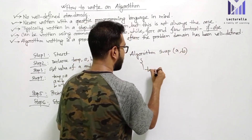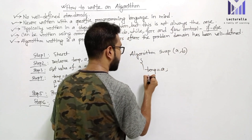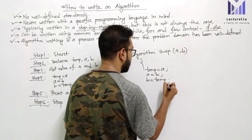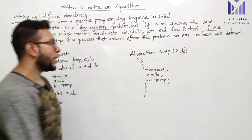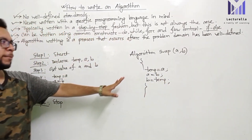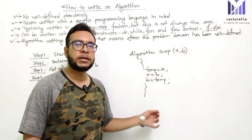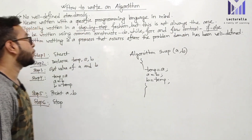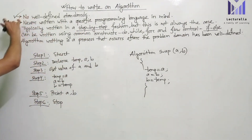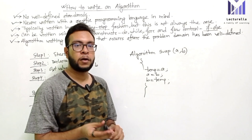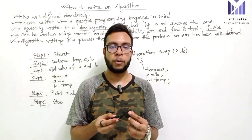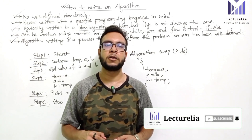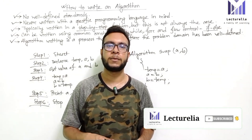To swap a and b, we use a temporary variable. This is the kind of algorithm — using a temporary variable for swapping. This is how to write an algorithm. Assalamualaikum.